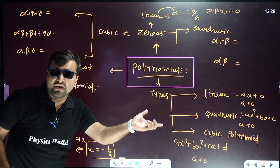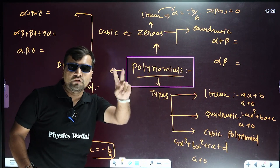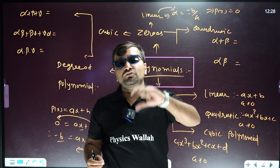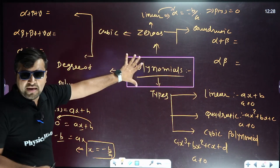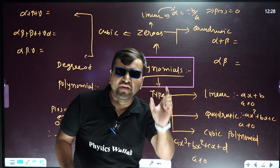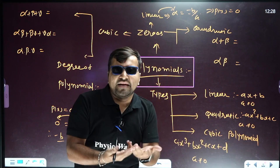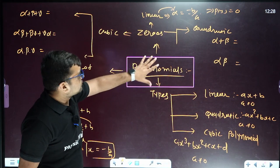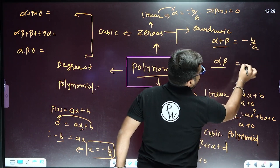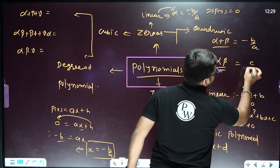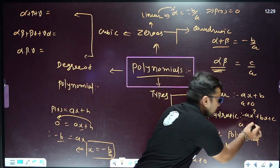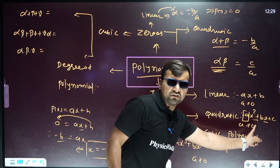For the quadratic polynomial, you can find at most 2 zeros. The degree of any polynomial is the highest power of the variable x. For the quadratic polynomial, the sum of the zeros (alpha plus beta) equals minus b upon a, and the product of the zeros equals c upon a. Here, a is the coefficient of x squared, b is the coefficient of x, and c is the constant term.